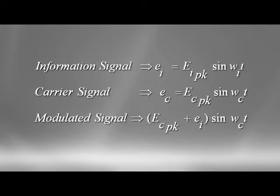As you can see here on the board, V(ωt) is equal to V_peak sine(ωt ± φ), where V_peak is the maximum amplitude of the sine wave, ω_c is the angular frequency, and φ is the phase angle.